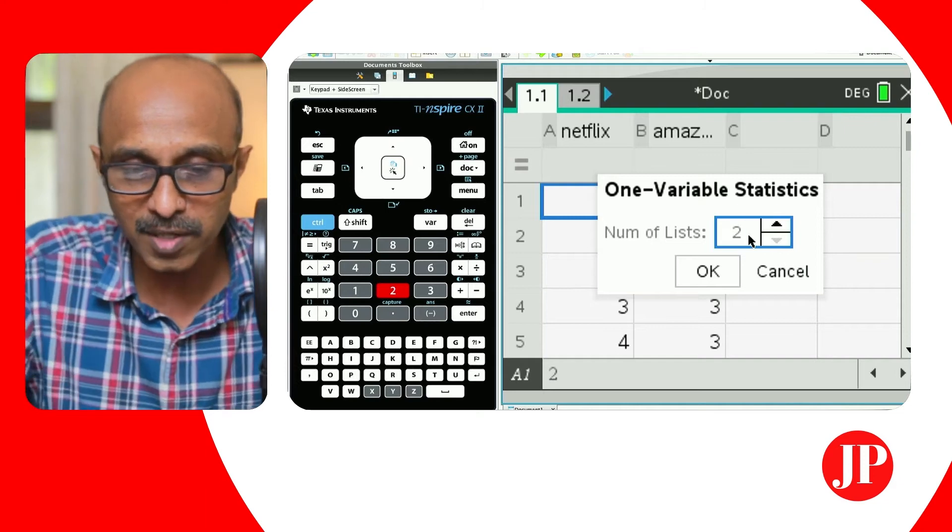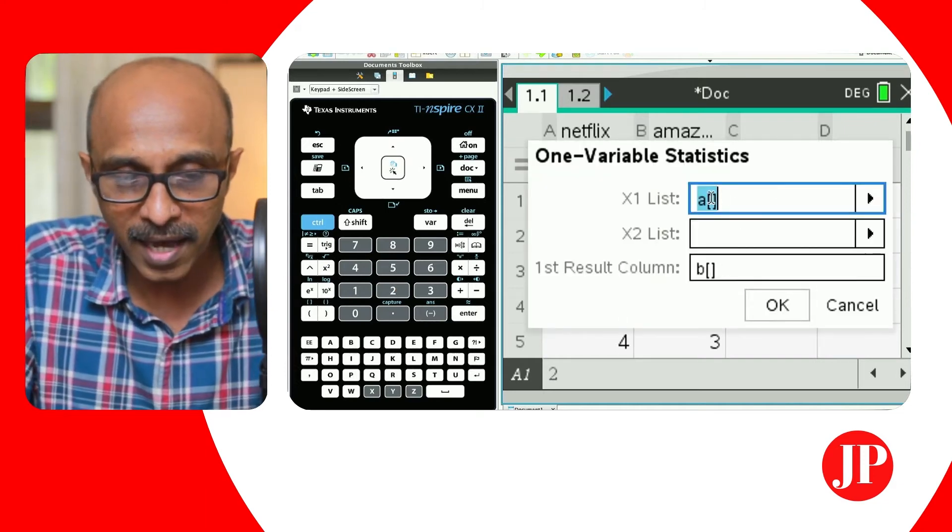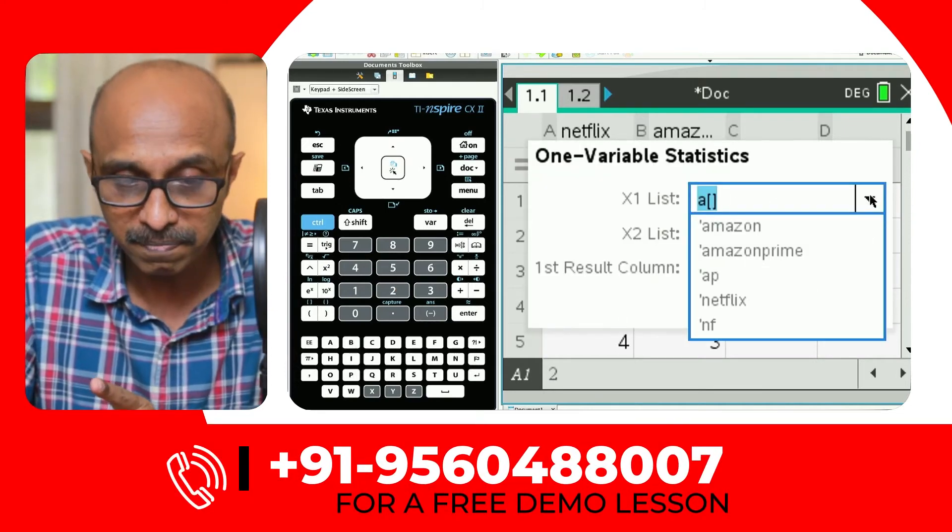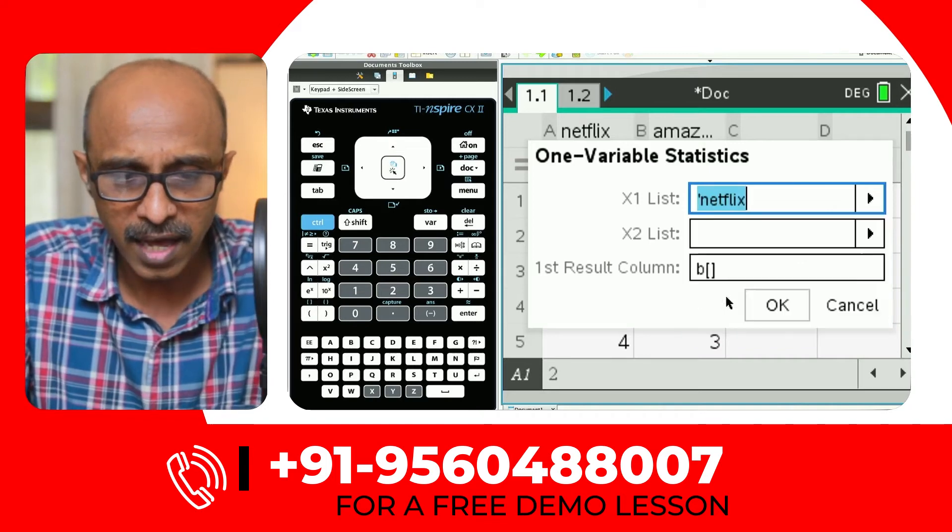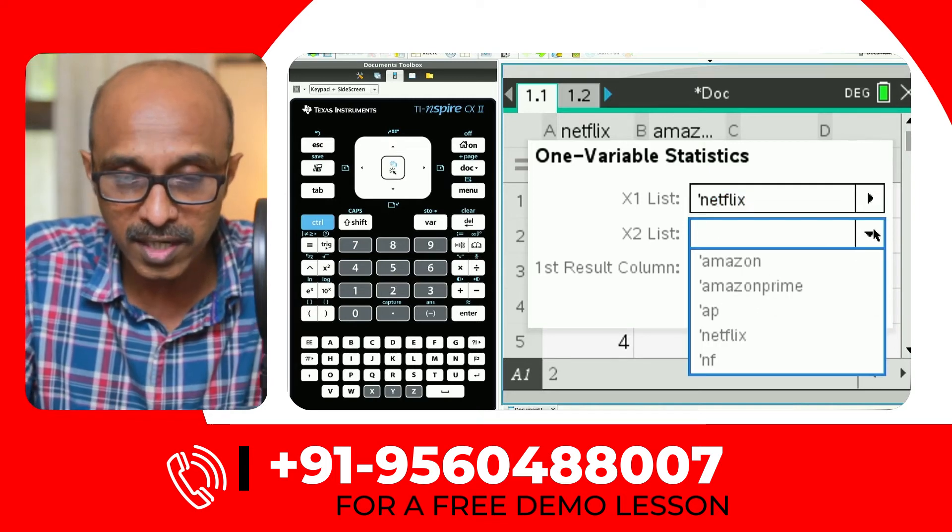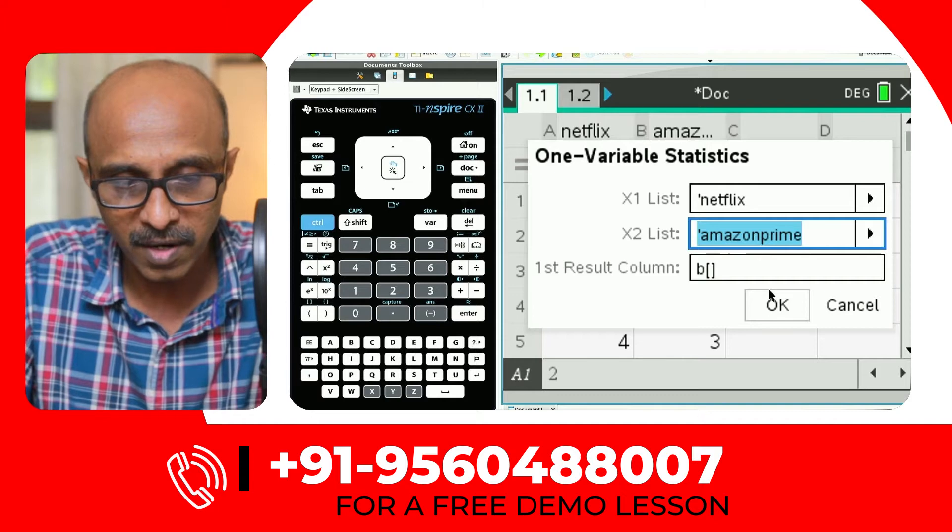Okay. You're still running one variable statistics, but for different number of lists of data. So this time I'm going to say two because I've got two different sets of data, Netflix and Amazon Prime. I'm going to say okay. And the X list I'm going to say is Netflix and the X two list I'm going to say is Amazon Prime. All right.